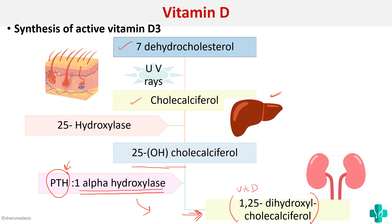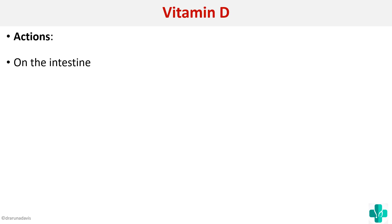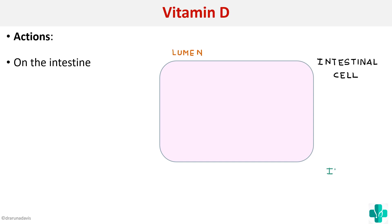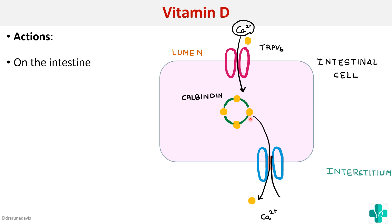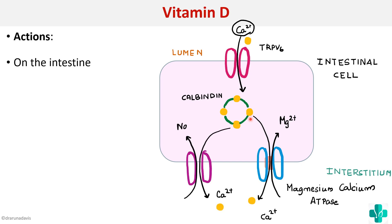The primary action of vitamin D is on the intestine. Calcium must be absorbed from the lumen into the intestinal cell via a channel called TRPV6. Inside the cell, calcium is bound by a calcium binding protein called calbindin. Finally, calcium is pumped out into the interstitium via two channels: the magnesium-calcium ATPase, which uses energy, and the sodium-calcium exchanger.